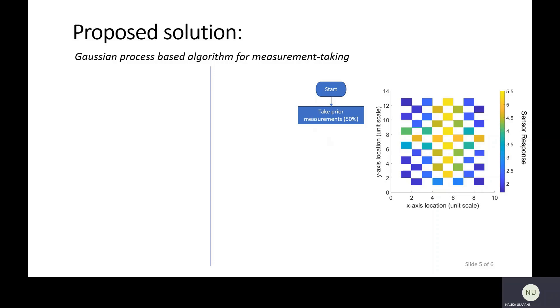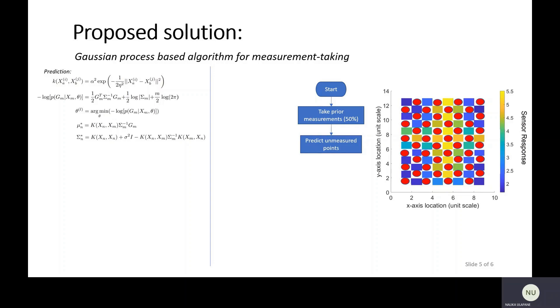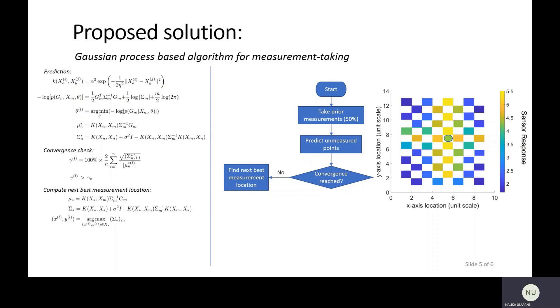Suppose you have taken your prior measurements, and the next step is you should predict the unmeasured points. The prediction is done using Gaussian process. The predictions are what is marked here as red dots in the diagram. Once you have done the prediction, the next step is to check convergence. We have defined a convergence criteria in this paper. Suppose you have reached convergence at this stage, then you don't have to collect any more measurements. But the chances are in the first few goals, you are not going to reach your convergence criteria. In case you have not reached your convergence criteria, the next thing that should be done is to locate a point that is best to be measured. That locating of the next best point is done through the maximum uncertainty principle, and the uncertainties used are computed through Gaussian process.